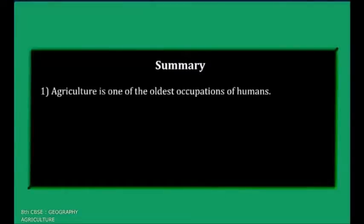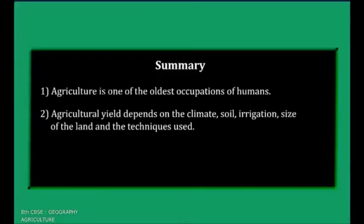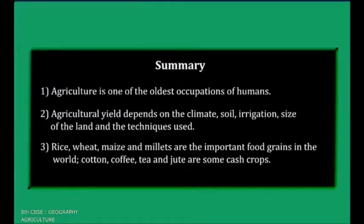Summary: Agriculture is one of the oldest occupations of humans. Agriculture yield depends on the climate, soil, irrigation, size of land and the techniques used. Rice, wheat, maize and millets are the important food grains in the world. Cotton, coffee, tea and jute are some cash crops.